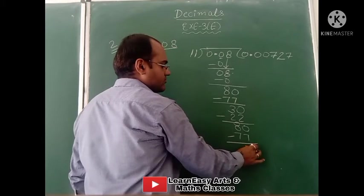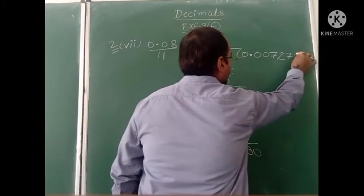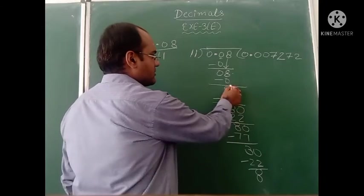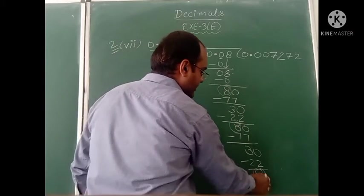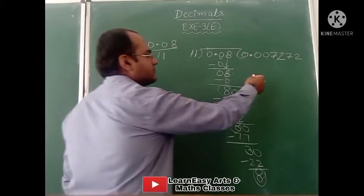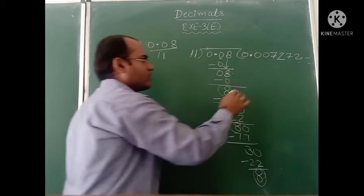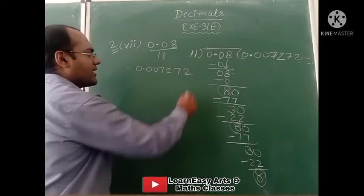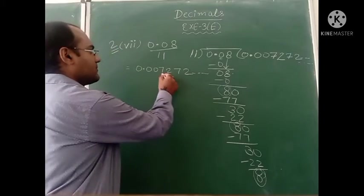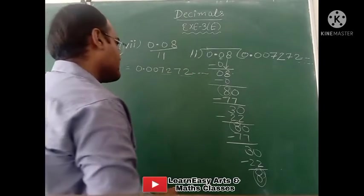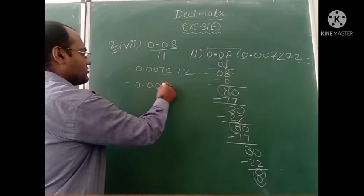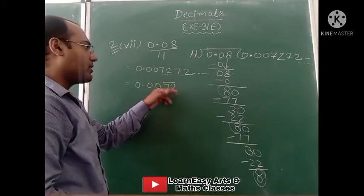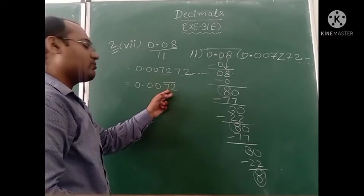We add 0, making 30. 11 times 2 is 22. Again remainder is 8. So here we observe that remainders are coming the same again and again: 8, 8, 8. This is a non-terminating decimal. On dividing we get 0.007272 and so on. You observe that 72 is repeating. We write 0.007272 and put bar on 72, because bar represents that this is a repeating number. So like this you do question number 2, part number 7.